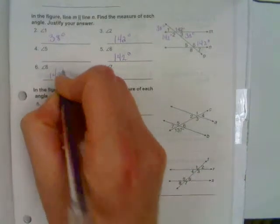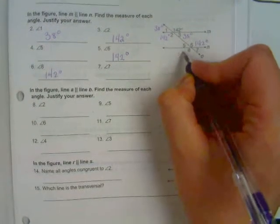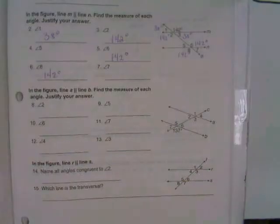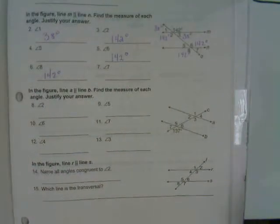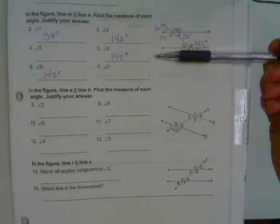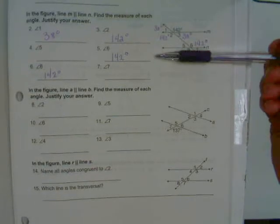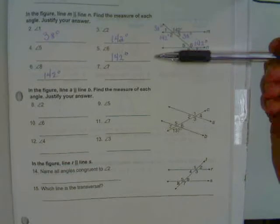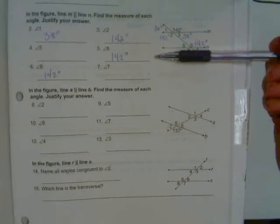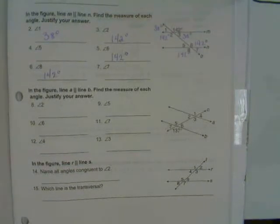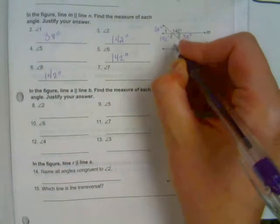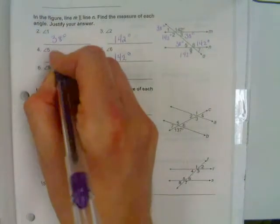So 8 is also going to measure 142 degrees. Then for 5 and 7, the concept would be the same no matter which of those two you decide to work with, 6 or 8. Let's look at just 5 and 6 for a moment. Those two together, if I ignore that line that runs diagonal, would make 180 degrees. If I already have 142, that means I'm missing 38.